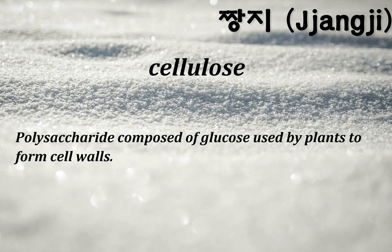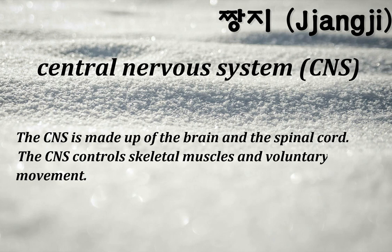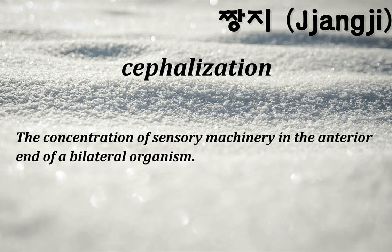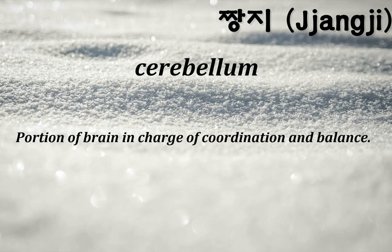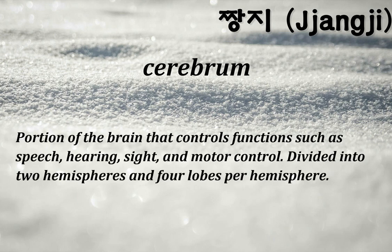Cellulose: a polysaccharide composed of glucose used by plants to form cell walls. Central nervous system (CNS): made up of the brain and spinal cord; controls skeletal muscles and voluntary movement. Cephalization: the concentration of sensory machinery in the anterior end of a bilateral organism. Cerebellum: portion of brain in charge of coordination and balance. Cerebrum: portion of the brain that controls functions such as speech, hearing, sight, and motor control.